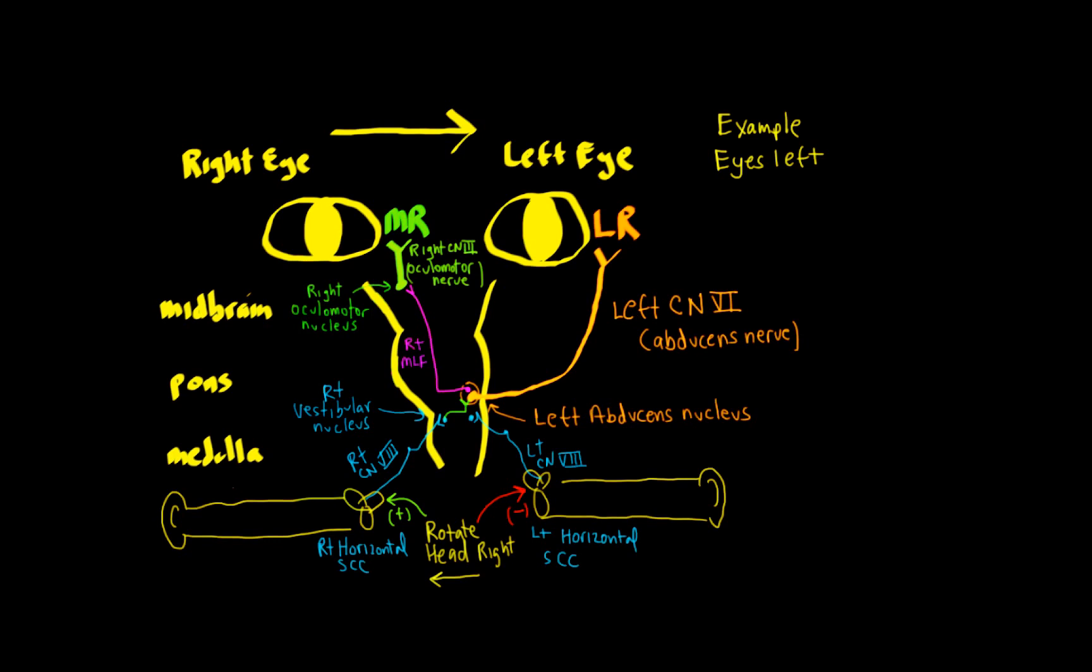Now, smooth pursuit works the same way. We're not going to draw that out. Since this eye movement control system is holding an image of a moving target on the fovea, we obviously have to have our vision system working. And then we're simplifying things and saying that we're going to ultimately go to the vestibular nucleus, which is also used by the VOR to do the smooth pursuit.